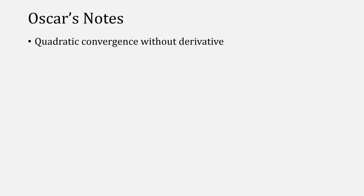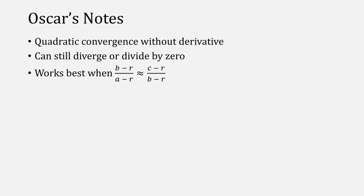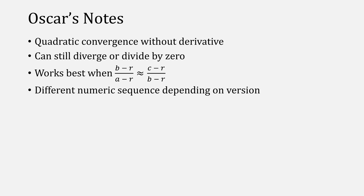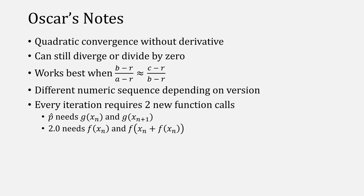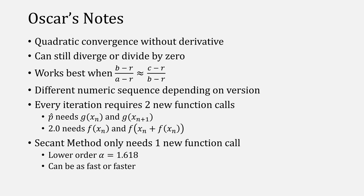Some notes on Stephenson's method: we achieve quadratic convergence without a derivative, although we can still diverge or divide by zero. The method also works best when our error ratios are approximately equal to each other, so if you're too far away it might have a tough time. Depending on the version of Stephenson's method you use, you might get a different numeric sequence, although it's doing the same thing. Note that every iteration of Stephenson's requires two new function calls — either two new g of x calls or two new f of x calls. Compared with the secant method, which only needs one new function call, even though it has a lower order, it might actually converge faster depending on how complicated your function is.